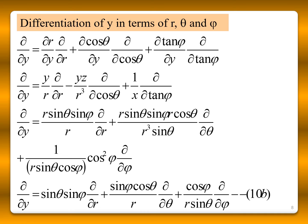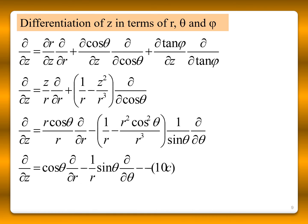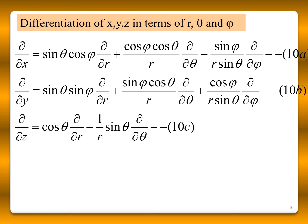For ∂/∂y: ∂/∂y = sinθ sinφ (∂/∂R) + (sinφ cosθ / R)(∂/∂θ) + (cosφ / R sinθ)(∂/∂φ). And for ∂/∂z: ∂/∂z = cosθ (∂/∂R) − (sinθ / R)(∂/∂θ). These are all the expressions, which have been summarized in one slide.